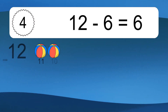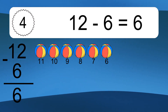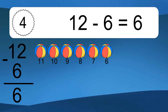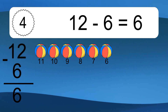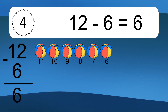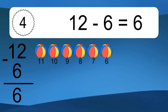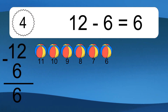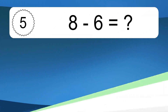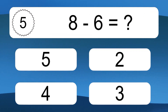12 minus 6 equals what? 12 minus 6 equals 6. Let's count it: 11, 10, 9, 8, 7, 6.